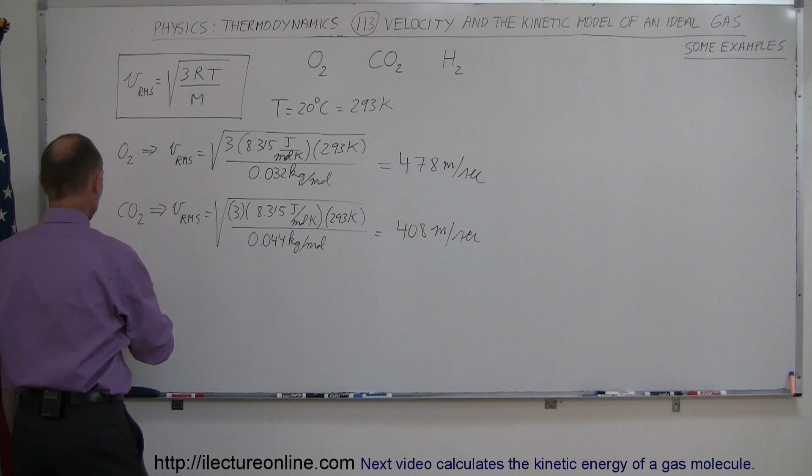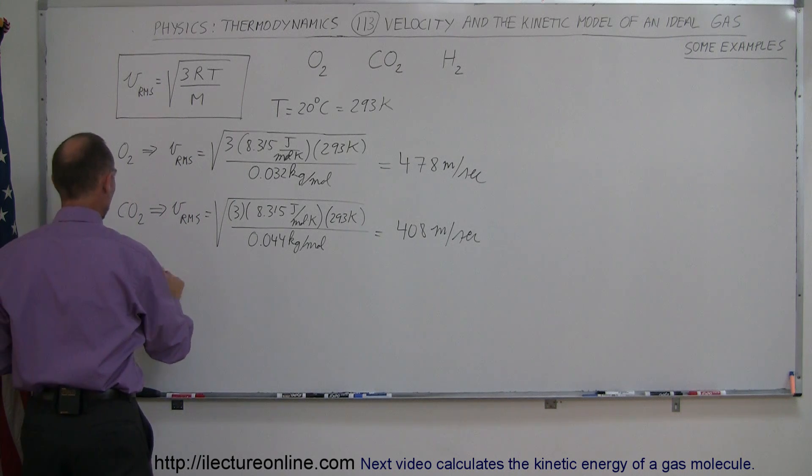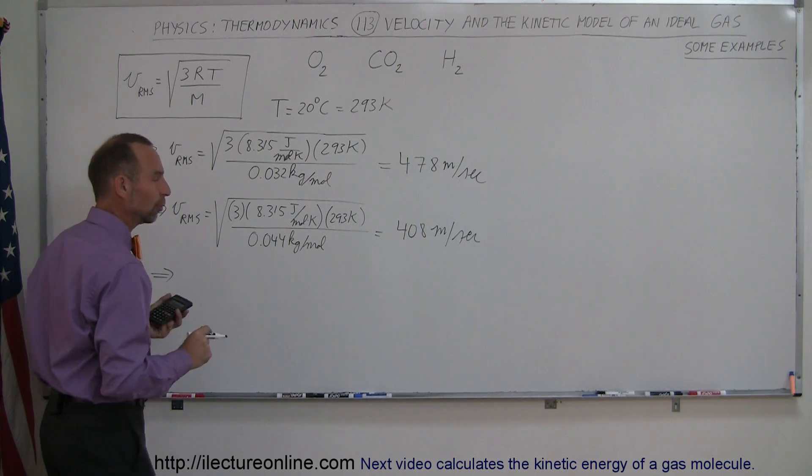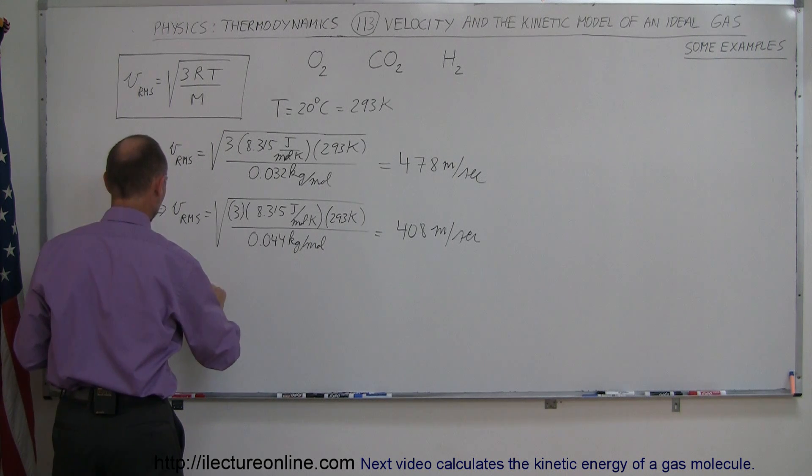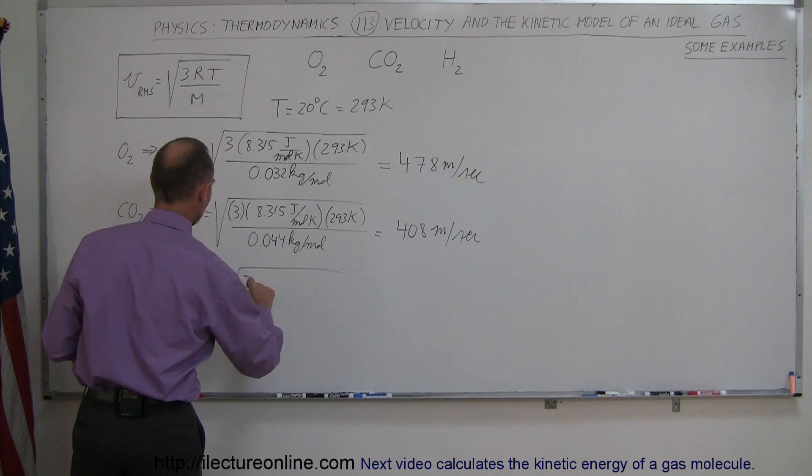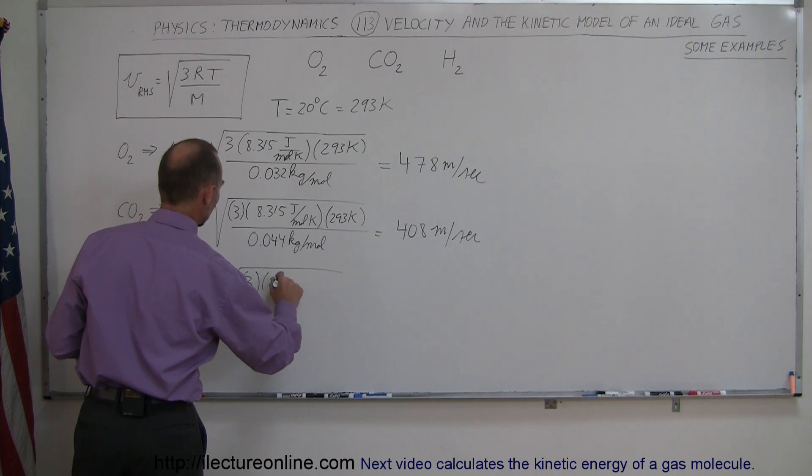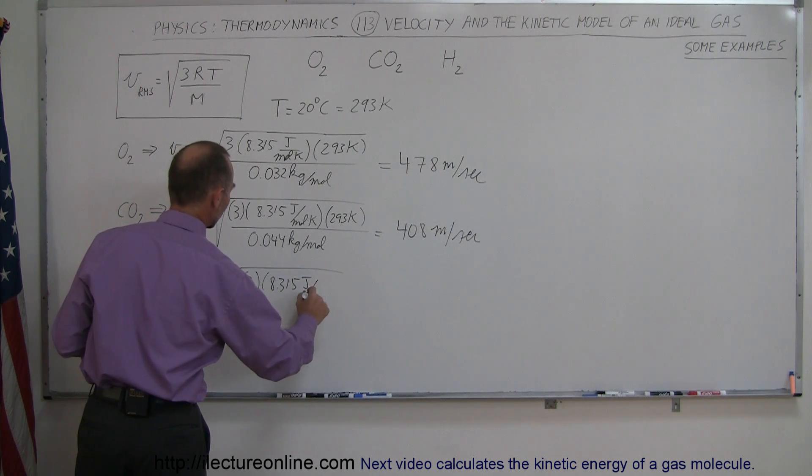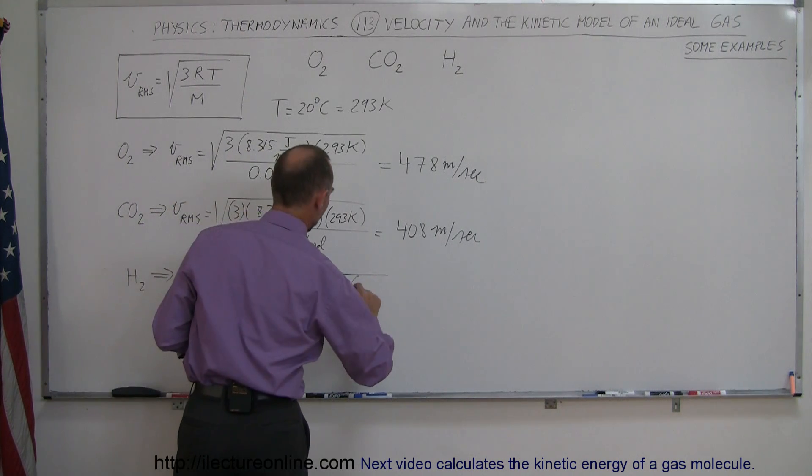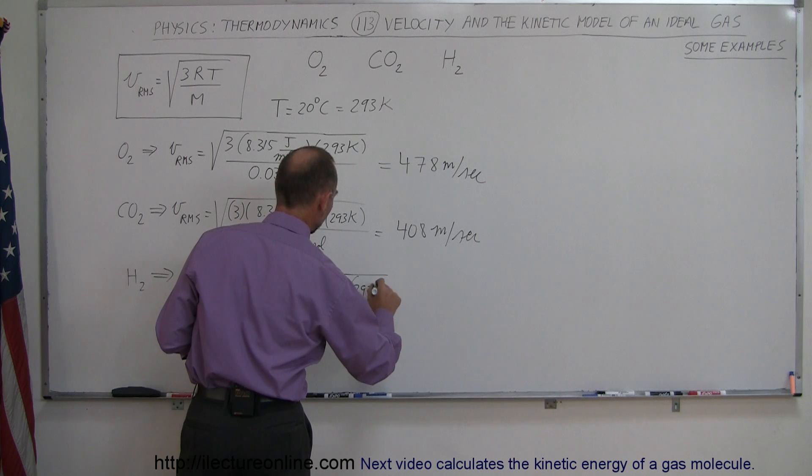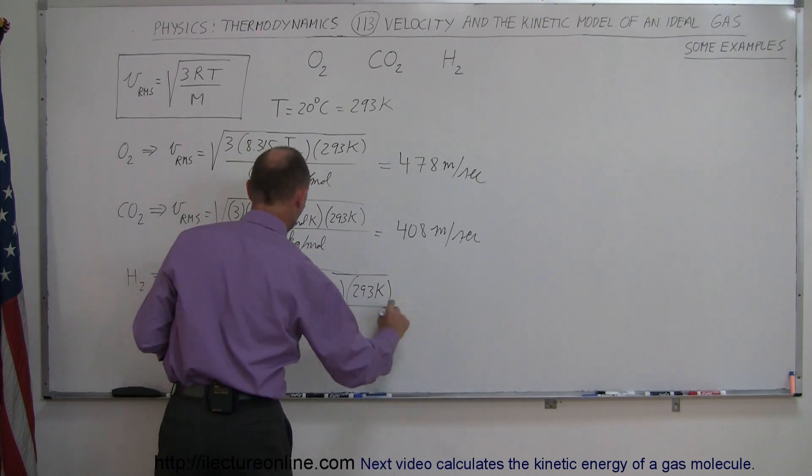Now, let's take a look at hydrogen. Hydrogen is a very light molecule, so we expect that one to move a lot faster. So, let's find out. vRMS is equal to the square root of 3 times 8.315 joules per mole times Kelvin times, and notice the temperature is the same for all of them.